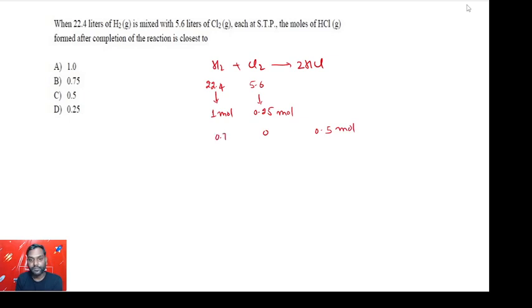0.75 mole will remain unused in the mixture. So the correct answer for this question is option C, 0.5 mole of HCl gas would be produced.